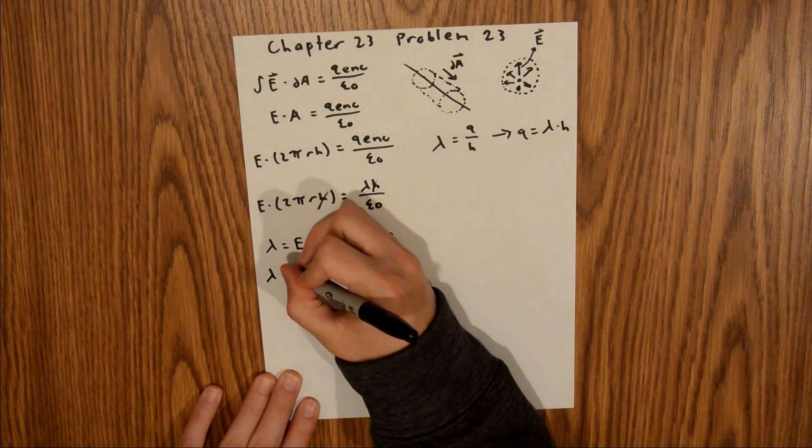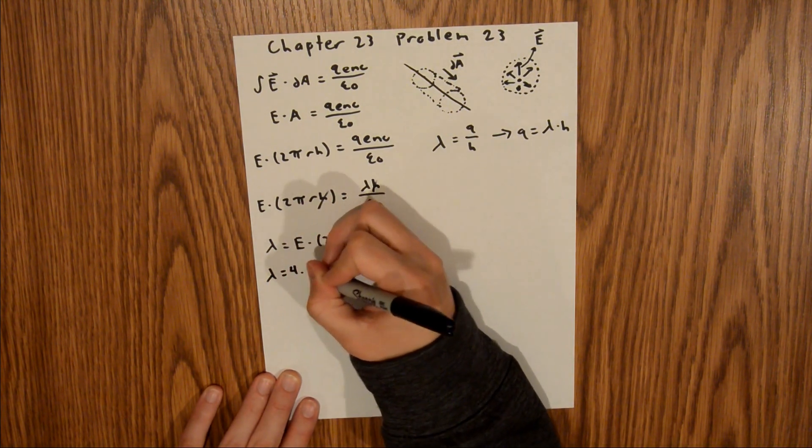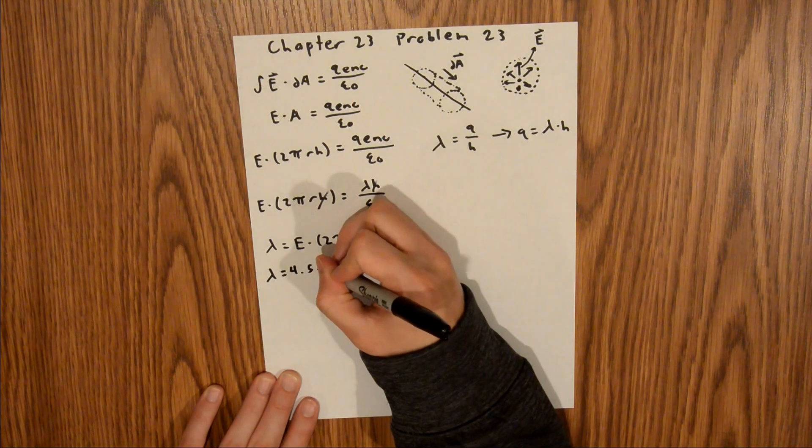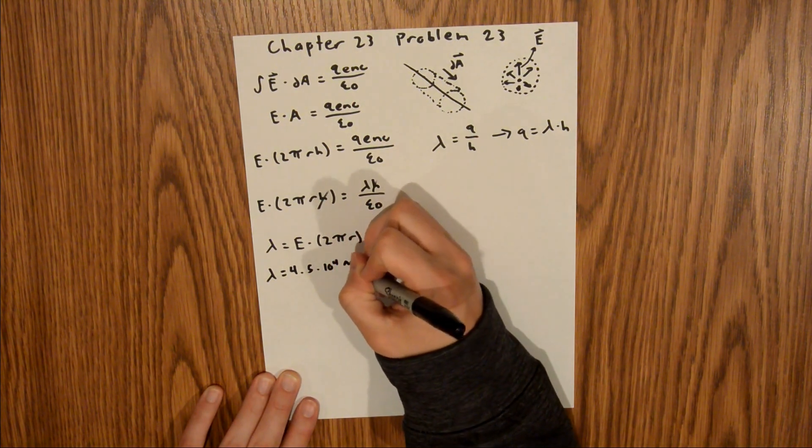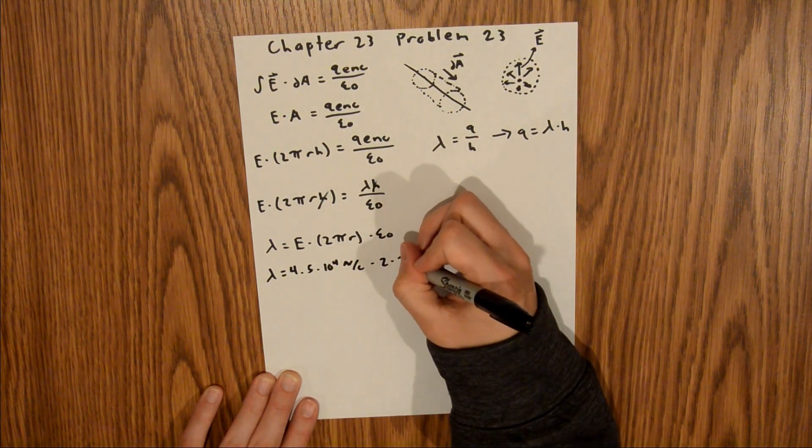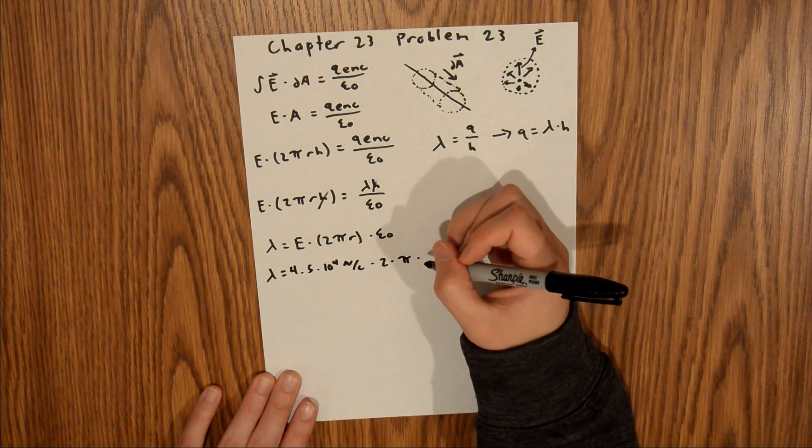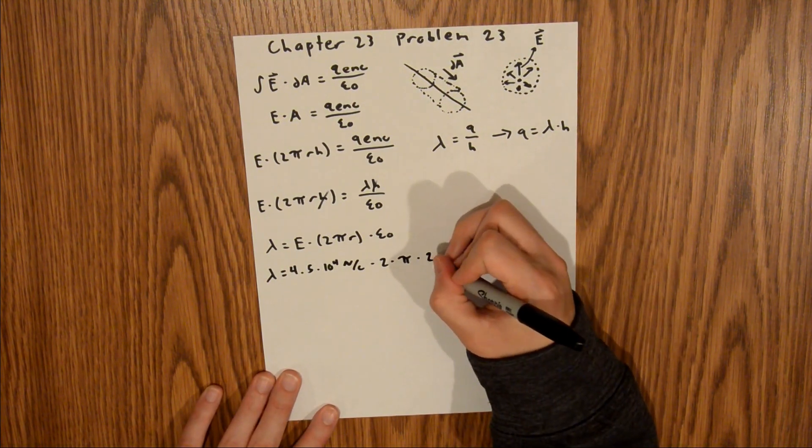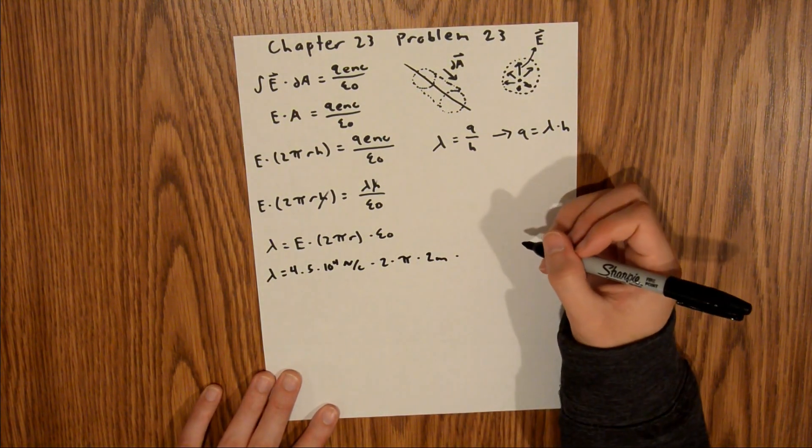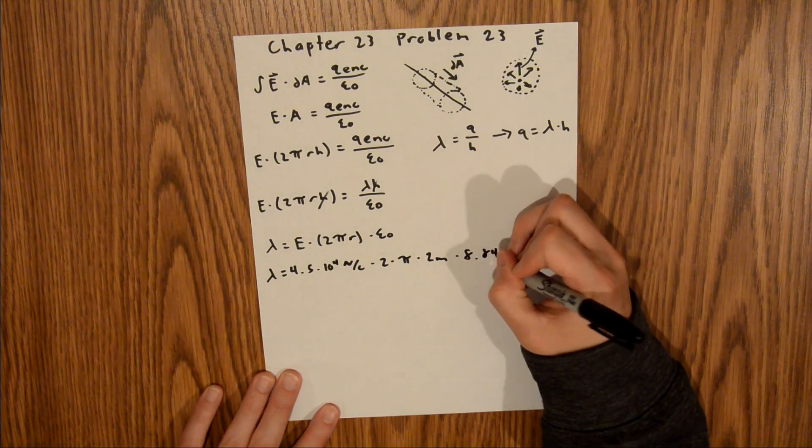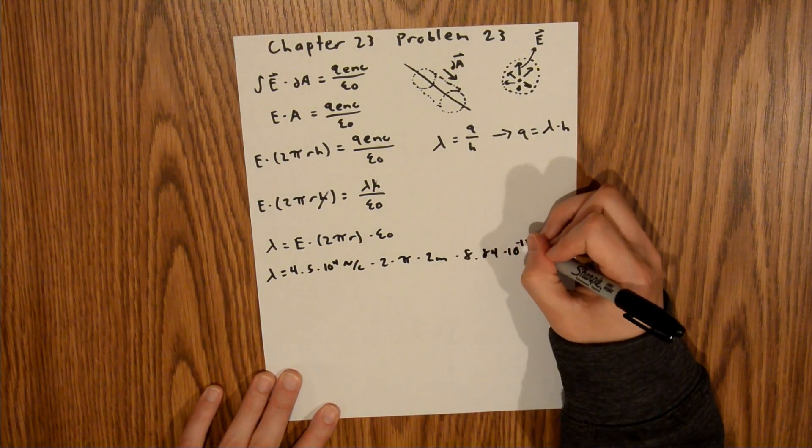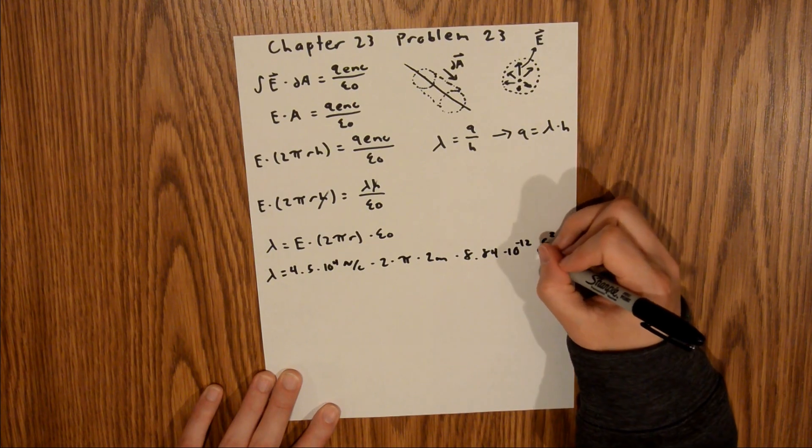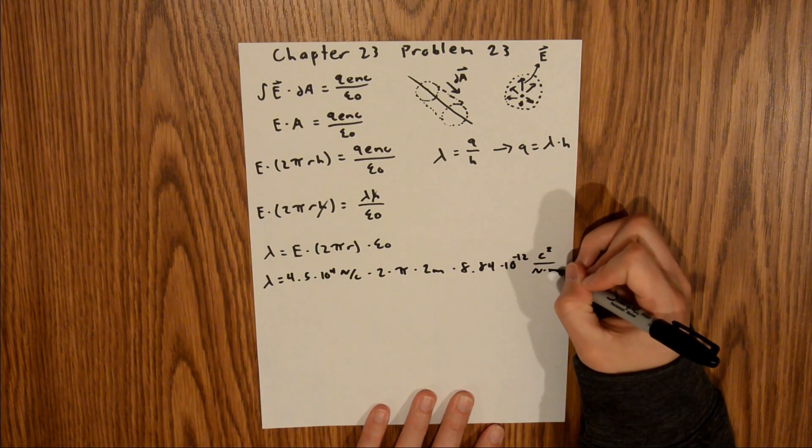So lambda is equal to E, which is given in the problem, as 4.5 times 10 to the 4th newtons per coulomb times 2 times pi times our radius, which we're told in the problem is 2 meters. And then finally times our vacuum permittivity constant, which is 8.84 times 10 to the negative 12th coulombs squared per newton times meter squared.